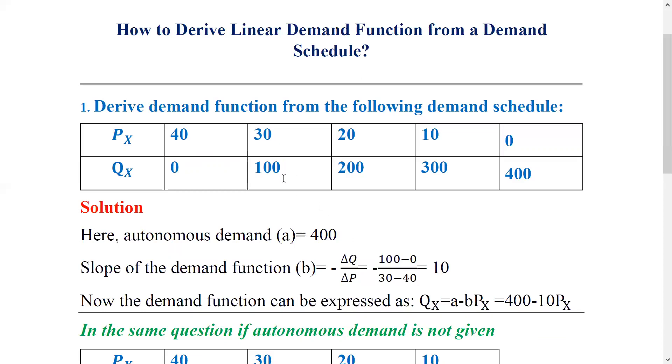The quantity demanded is 100 units, and the corresponding value on the demand function is also 100.